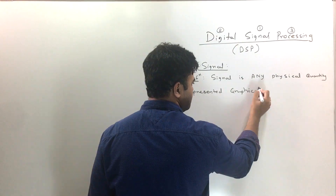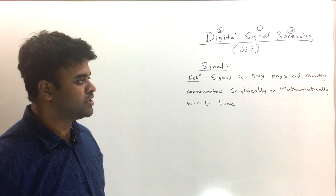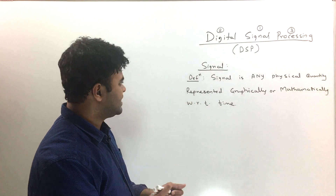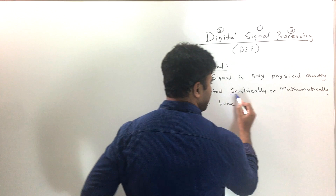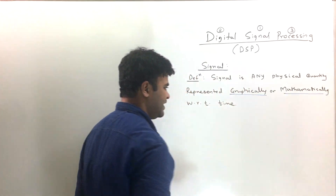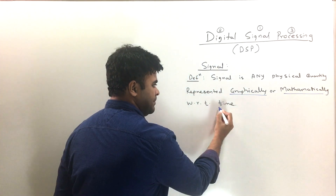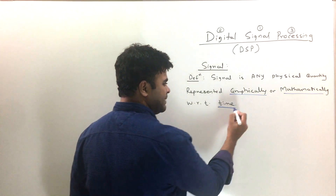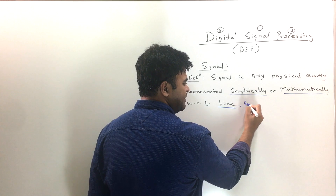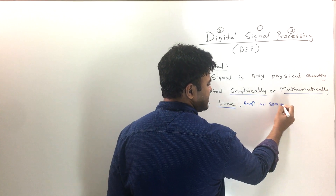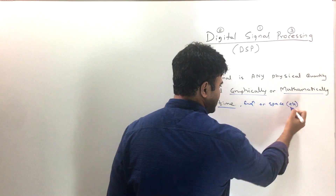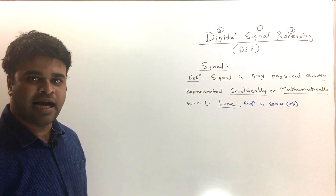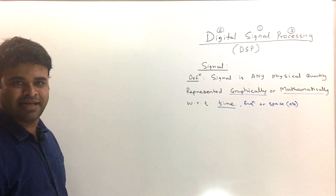As far as the definition goes: a signal is any physical quantity that can be represented graphically or mathematically, typically with respect to time. That's the formal definition. Sometimes it can be time, frequency, or space — there could be a few more as well. Don't worry too much about the definition; I'll give you some examples to make you understand what signals are.